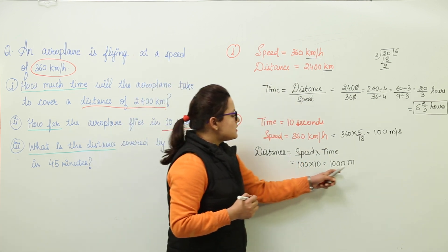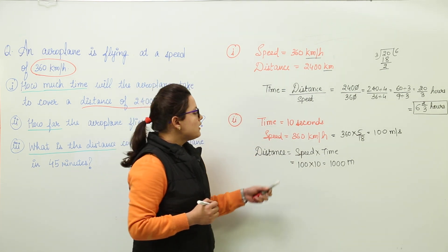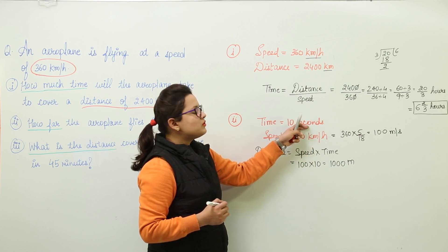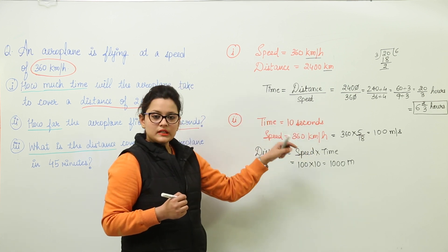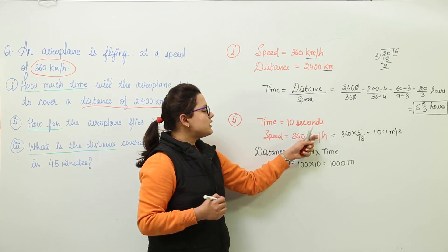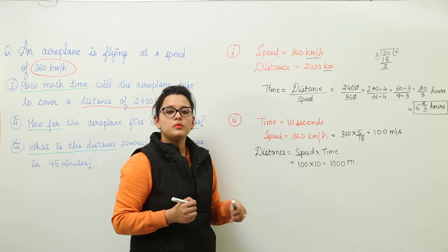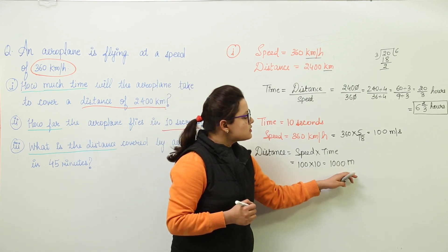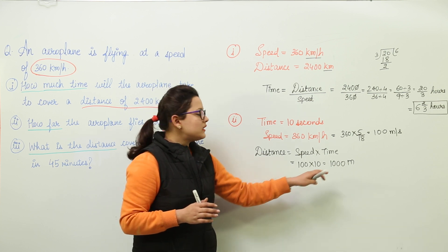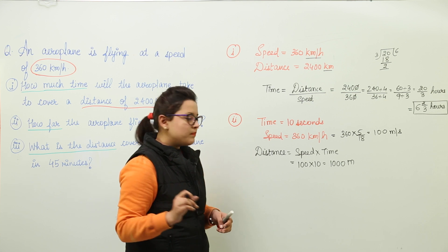The distance is 1000 meters. You can also express it in kilometers. Whether the data was handled in meters per second or kilometers per hour, the answer remains the same — you can write it in meters or convert to kilometers, the value is equivalent.